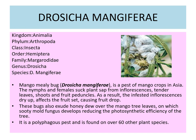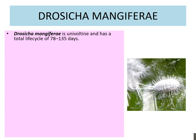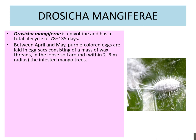It is a polyphagous pest and is found over 60 other plant species. Drosica mangiferae is univoltine and has a total life cycle of 78 to 135 days. Between April and May, purple colored eggs are laid in an egg sac consisting of a mass of wax threads in the loose soil within a 2 to 3 meter radius of the infested mango tree.